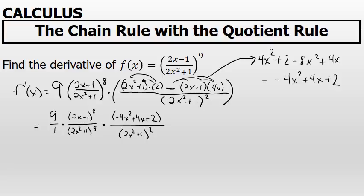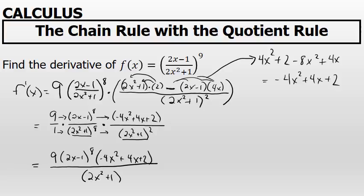Now, at this point, I'm going to multiply across those three fractions that I've just written. I'm going to multiply the numerators, and across the bottom, I'll multiply the denominators. The numerator can then be written as 9 times 2x minus 1 to the 8th times negative 4x squared plus 4x plus 2. And the denominator can be written as 2x squared plus 1 to the 8th times 2x squared plus 1 to the 2nd. These are like bases, so I can just write that base one time and add the exponents.